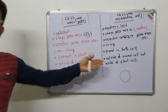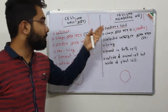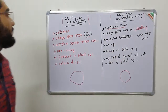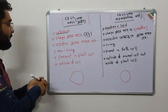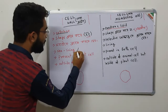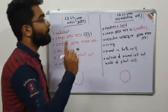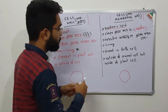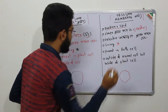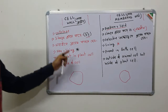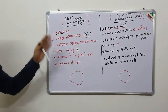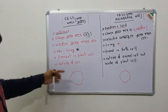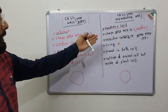The cell wall is non-living, because the cell membrane is the living part of the cell. The cell wall is present in plant cells, which is the main source of plant cells.